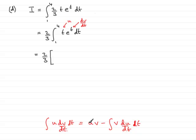So, according to the formula, it's u times v. That is u, being the t, multiplied by v, which is the integral of e to the t with respect to t. So, that would be e to the t. If you integrate e to t with respect to t, you get e to the t.